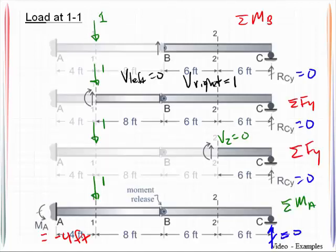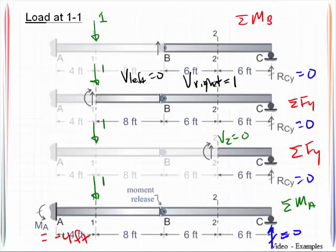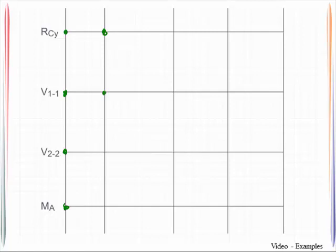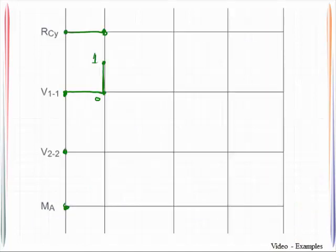Now let's go to point 1-1. Okay, RCY is 0. Now the shear just to the left of section 1-1 is 0, but the shear just to the right of section 1-1 is a positive 1. So I'll plot this here as 0, and then a 1. In fact, I'm going to avoid confusion here, and I'm just going to connect these dots as we go. Let's go here. Shear at 2-2 is 0, but the moment is negative 4 feet. So let's go ahead and get those plotted in here. Negative 4.